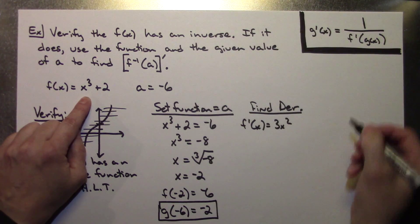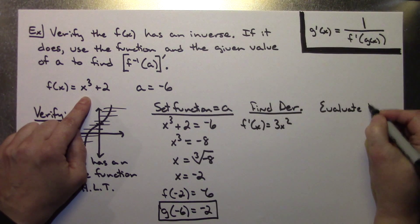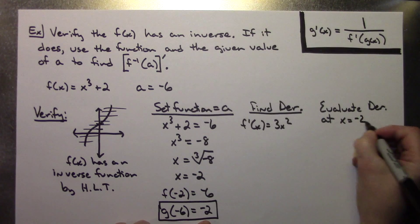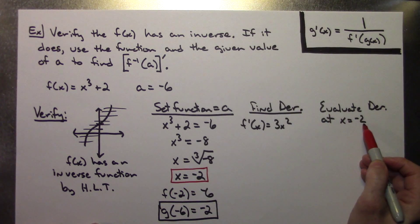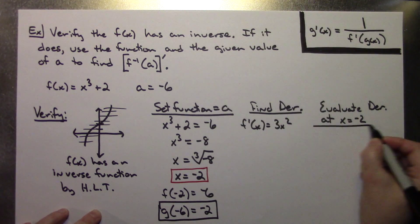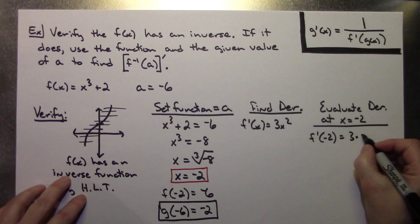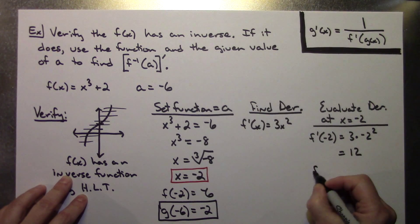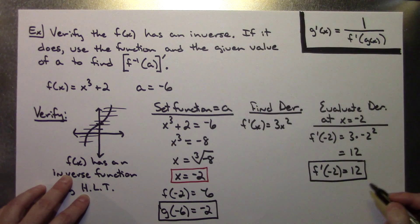For the next step, before I actually use the formula in the last step, I'm going to evaluate my derivative at x equals negative 2 — that's what we got when we solved the original function. So f prime of negative 2 is 3 times negative 2 squared. Negative 2 squared is 4, times 3 gives me 12. So f prime of negative 2 equals 12, and that's another value that we need.